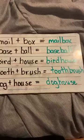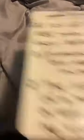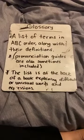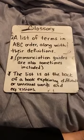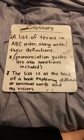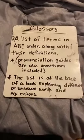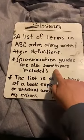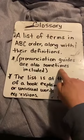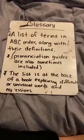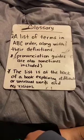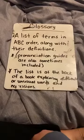All right, friends. The next thing we're going to talk about today is: what is a glossary? A glossary is a list of terms. It's always in ABC order. It gives words along with their definitions. And sometimes it gives a pronunciation of how to say those words. If it's a tricky word, they will have that included with hyphens or lines over the top so that you know how to say that word.